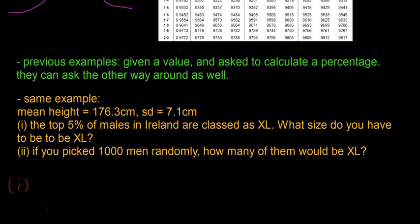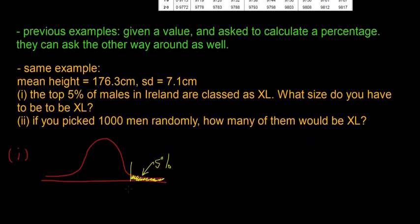So top 5% of males. So I'm just going to draw the bell curve. We're going to have the top 5% somewhere above here. So we know that that is 5%, but we don't know what this value is. So I'm going to call it Z, and we want to find what Z score gives you 5% or above you.